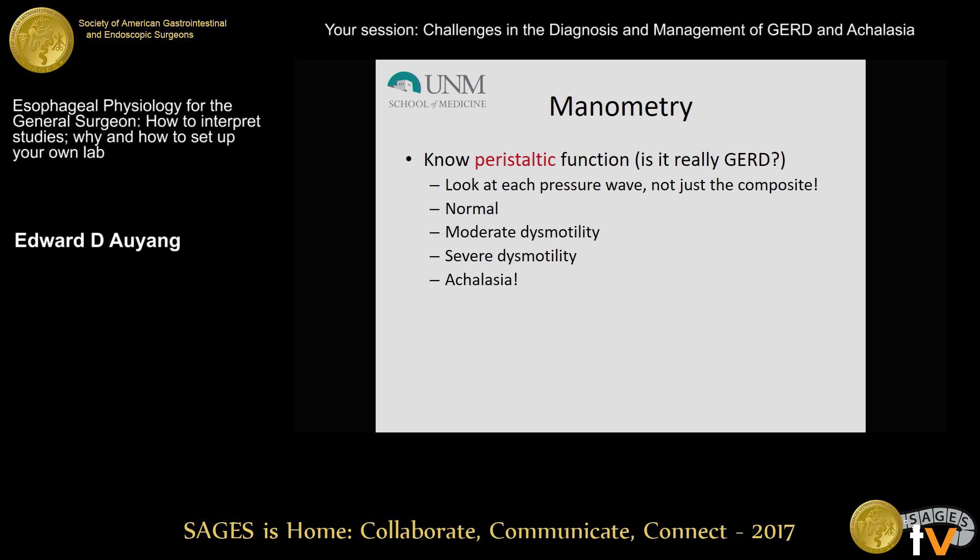For manometry, there are two key things you should always look at. First is peristaltic function. If somebody comes in complaining of regurgitation or dysphagia, there's a high likelihood it's gastroesophageal reflux disease, but it could be another motility disorder. You need to look at peristaltic function of the esophagus — not just the composite. A report will usually have a composite picture hybridized across all 10 swallows, and that doesn't give you the true picture of each swallow. Look at each and every single swallow to make sure you do not have moderate or severe dysmotility. Unfortunately, some people just sign their name on whatever the software puts out. If you're not looking at each swallow, you could get fooled and end up doing an operation that's either contraindicated or inappropriate.